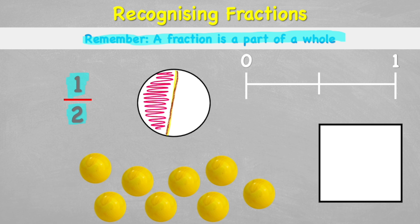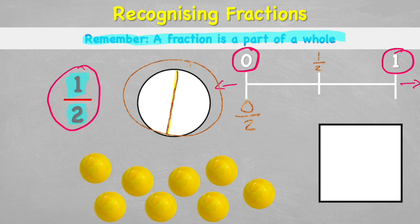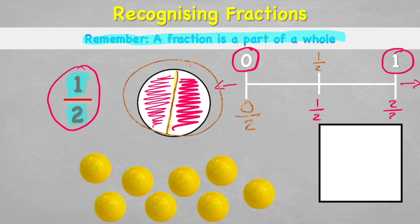This pink shaded area is one half. On a number line starting at zero and going to one, half is right in the middle. If we had no halves that would be zero; one half puts us in the middle; and two halves would be the same as one.